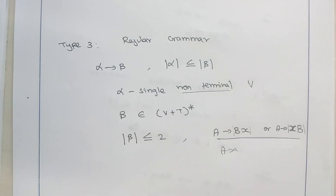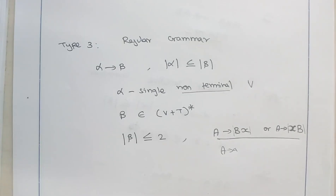For this regular grammar, the mathematical model that accepts it is called a finite automata. A finite automata does not have any external memory — each and every state remembers its own transition, so it has a very limited memory.